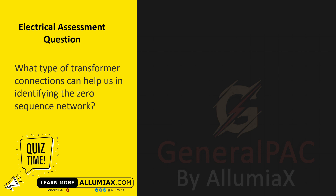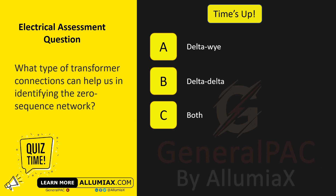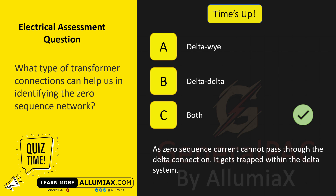What type of transformer connections can help us in identifying the zero sequence network? A. Delta-Y. B. Delta-Delta. C. Both. The answer is C — both. Zero-sequence current cannot pass through the delta connection, so it gets trapped within the delta system.